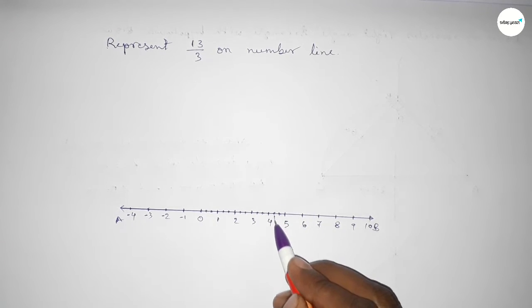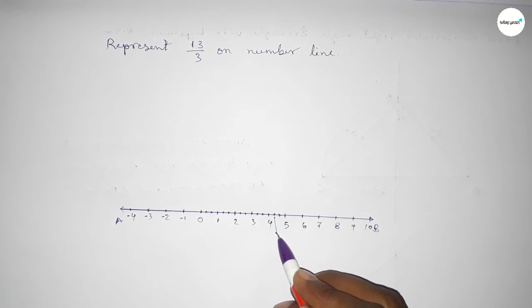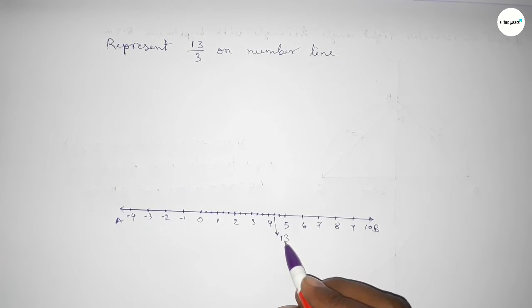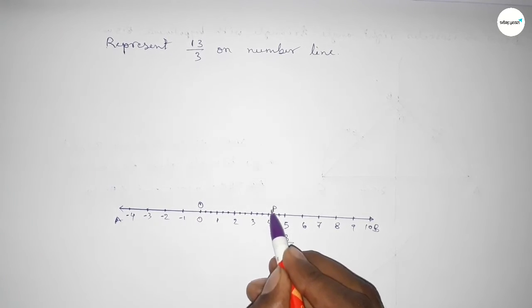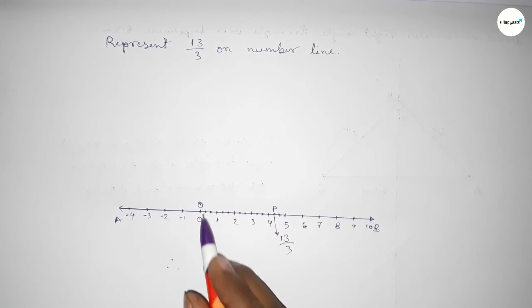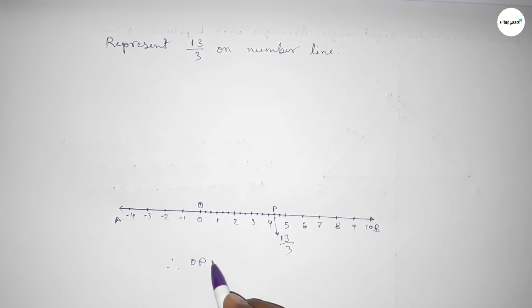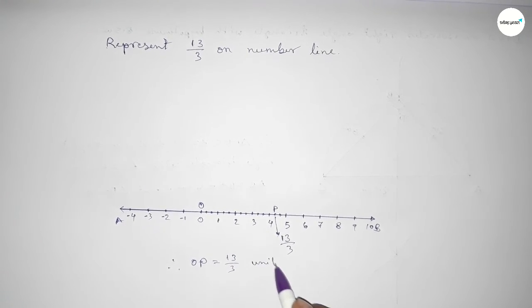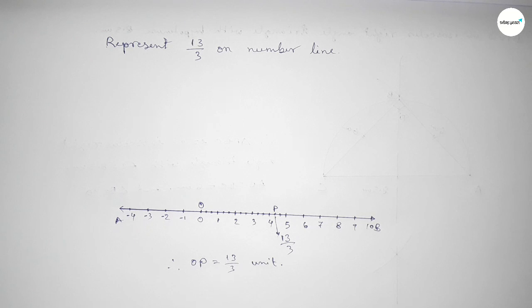So this is 13 over 3 on the number line. Taking here O and P, therefore OP = 13 over 3 units. That's all. Thanks for watching — if this video is helpful to you, please share it with your friends.